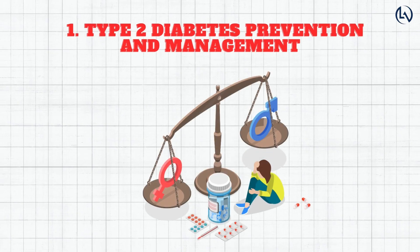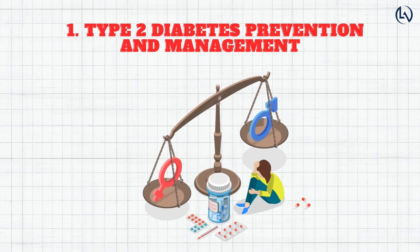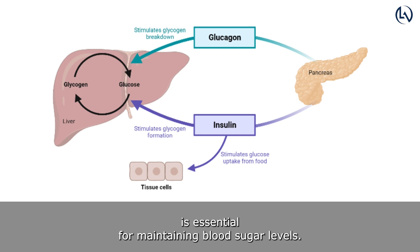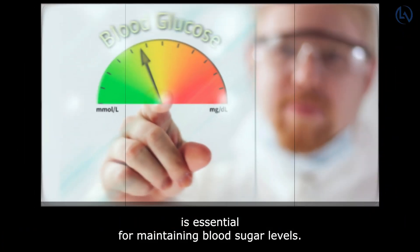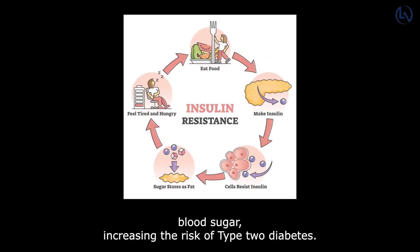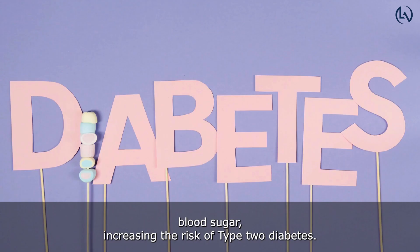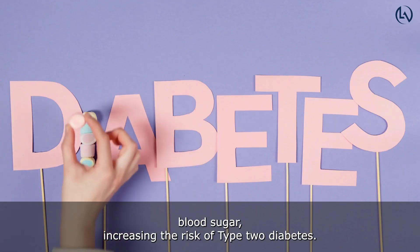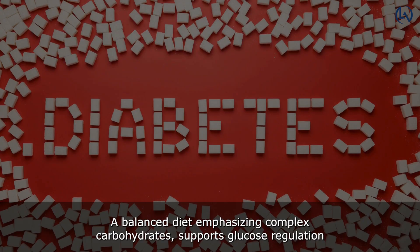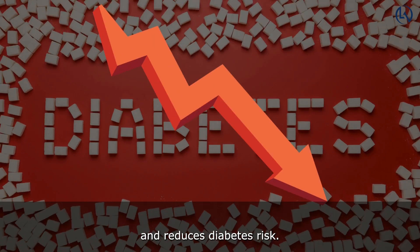Type 2 Diabetes Prevention and Management: Proper carbohydrate metabolism, regulated by insulin, is essential for maintaining blood sugar levels. Inadequacies or insulin resistance may elevate blood sugar, increasing the risk of type 2 diabetes. A balanced diet emphasizing complex carbohydrates supports glucose regulation and reduces diabetes risk.